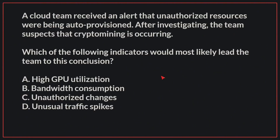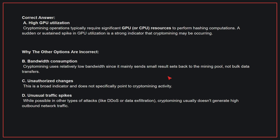A cloud team received an alert that unauthorized resources were being auto-provisioned. After investigating, the team suspects that crypto mining is occurring. Which of the following indicators would most likely lead the team to this conclusion? The correct answer is A: High GPU utilization.